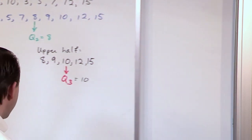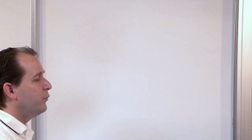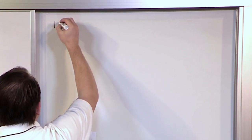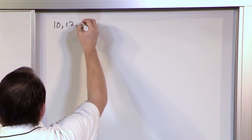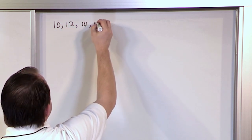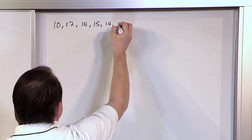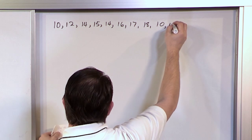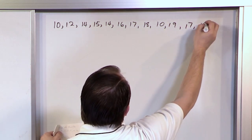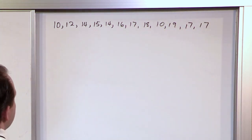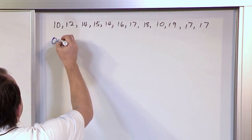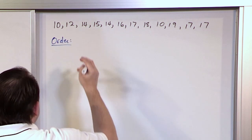It's really not too hard. Now we're going to do one more because I would like to show you what happens when your data set is not odd, when your data set is even. I would like to find the quartiles of these numbers: 10, 12, 14, 15, 14, 16, 17, 18, 10, 19, 17, 17. A lot more data values, but just like always, we need to order them to find medians.